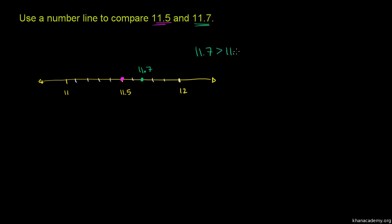11.7 is greater than 11.5. And really, seriously, you didn't have to draw a number line to figure that out. They're both 11 and something else. This is 11 and 5 tenths. This is 11 and 7 tenths. So clearly, this one is going to be greater. You both have 11, but this has 7 tenths as opposed to 5 tenths.